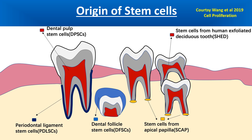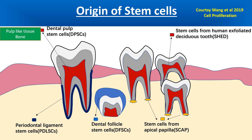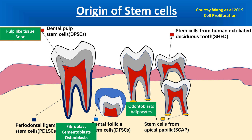Regarding the origin of stem cells: first, dental pulp stem cells, when differentiated, will produce pulp-like tissue and bone. Bone marrow stem cells will make fibroblasts, cementoblasts, and osteoblasts. For stem cells in the apical papilla — that is, in immature permanent teeth — they will differentiate into odontoblasts and adipocytes.